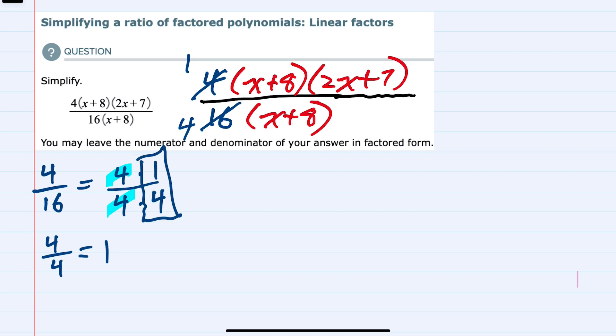Then looking at the linear pieces, we can see that both the numerator and the denominator have an x plus 8. So just like these 4's canceled, whenever we have the same factor in the numerator and the denominator,